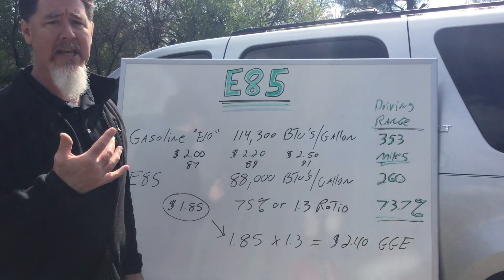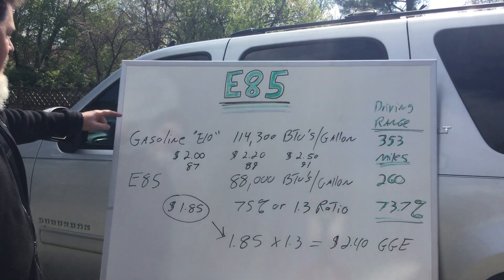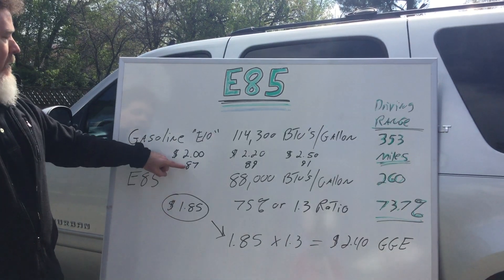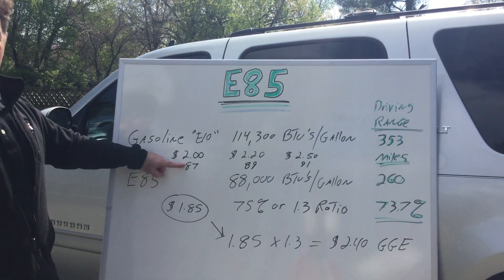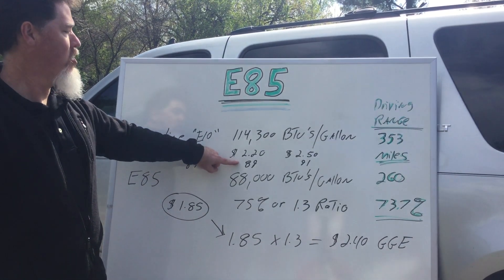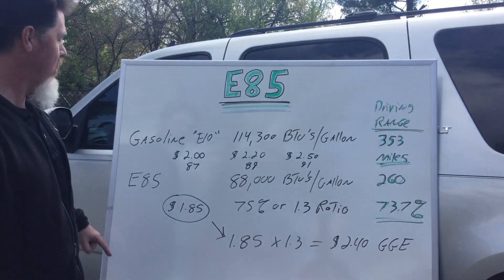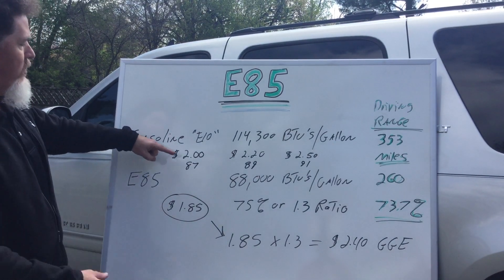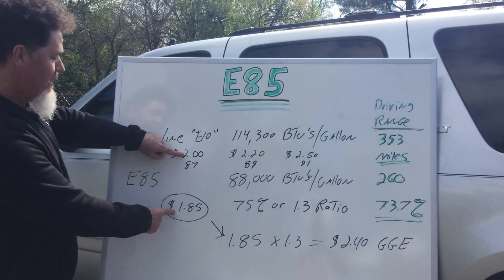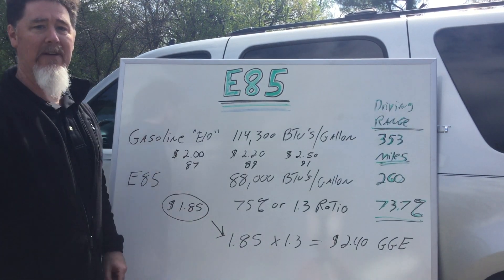We can either run gasoline or we can run E85. So when I go to the pump I see that E85 is $1.85 a gallon and my regular gasoline is $2.00 a gallon at 87 octane. If I want to go to mid-grade it's $2.20 a gallon and premium is $2.50 a gallon. This vehicle requires only 87 octane, so when I look at the price it looks like E85 is the better deal.